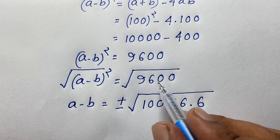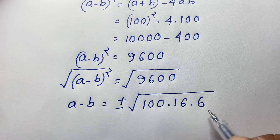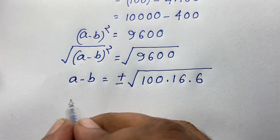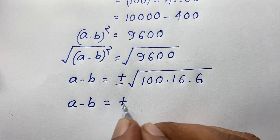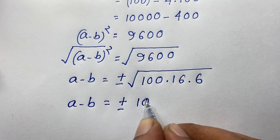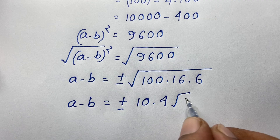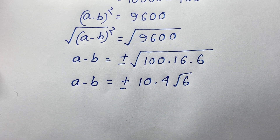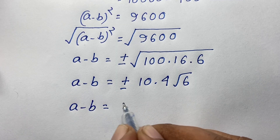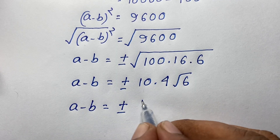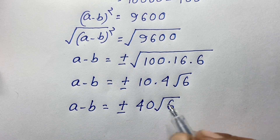So a minus b equals plus or minus square root of 100 times 16 times 6. Square root of 100 is 10, square root of 16 is 4, and square root of 6 remains. So a minus b equals plus or minus 40 square root 6.